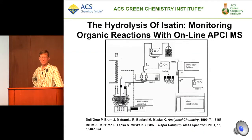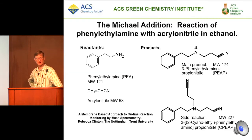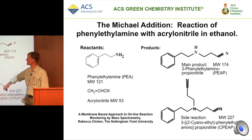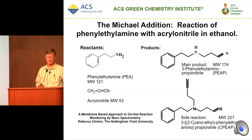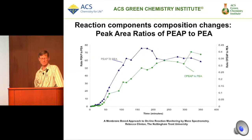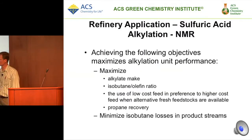Organic reactions with online mass spec are something more people are doing. In a Michael addition — phenylethylamine with acrylonitrile in ethanol — we want to find the main product, but we get an unwanted side reactant forming. You can very easily follow that using a membrane-based mass spec approach, looking at the relative areas under the curves to follow the reaction.